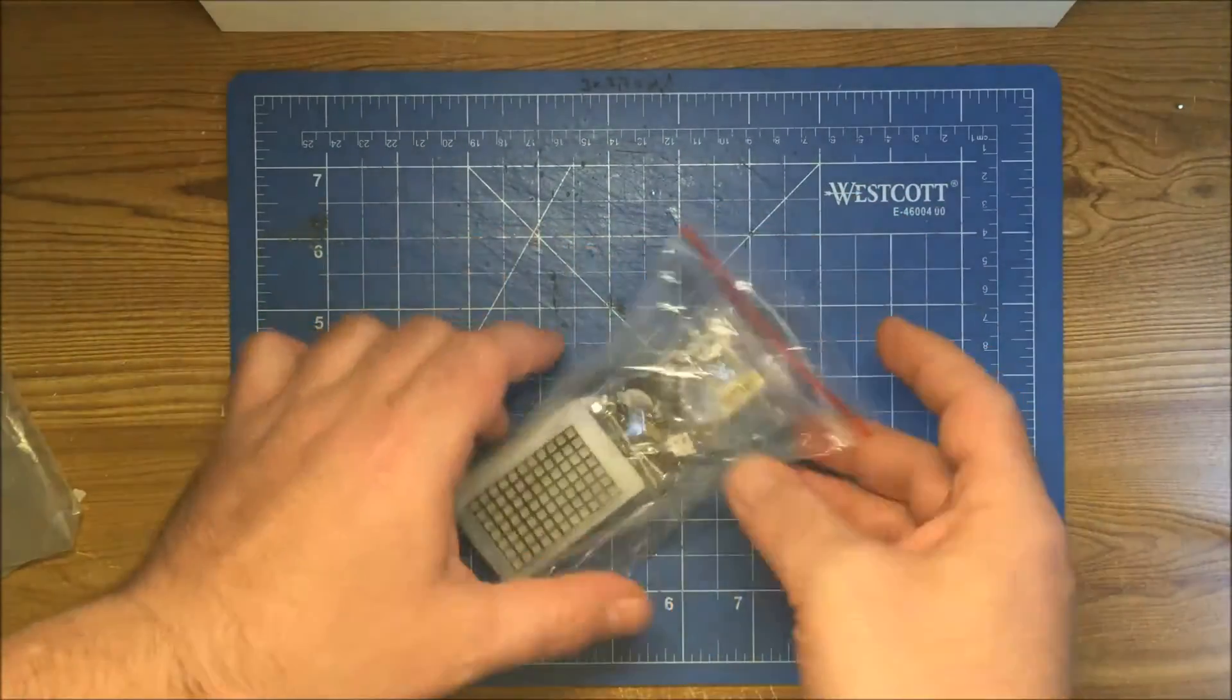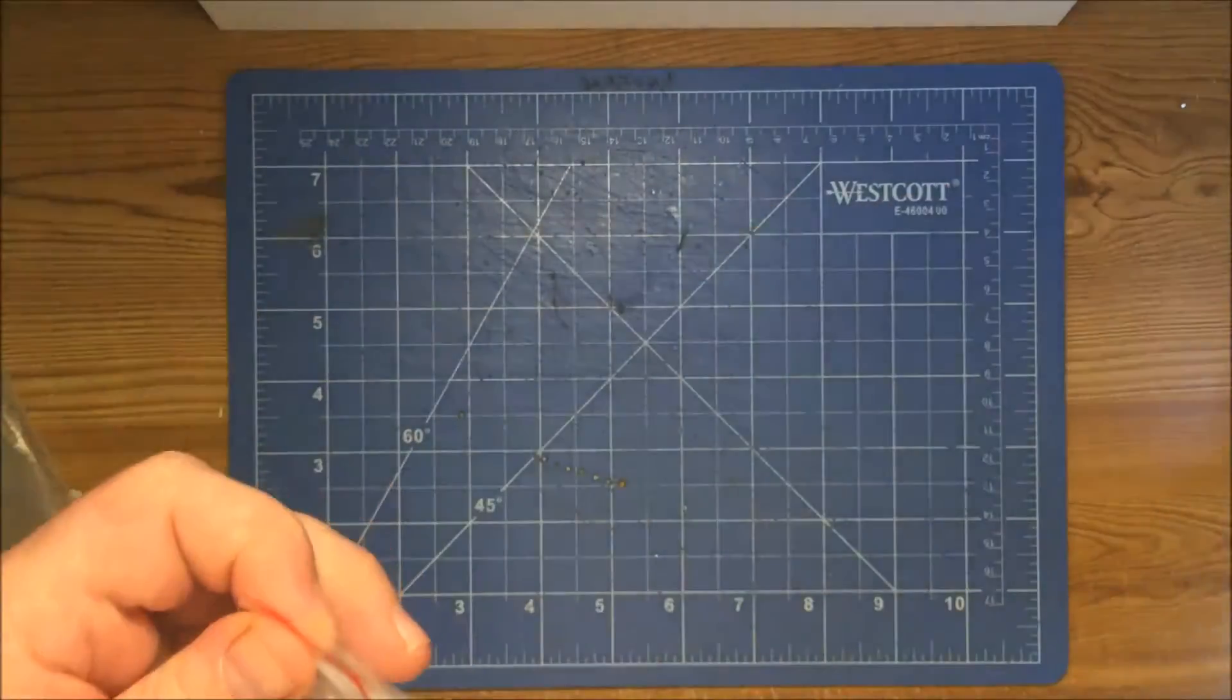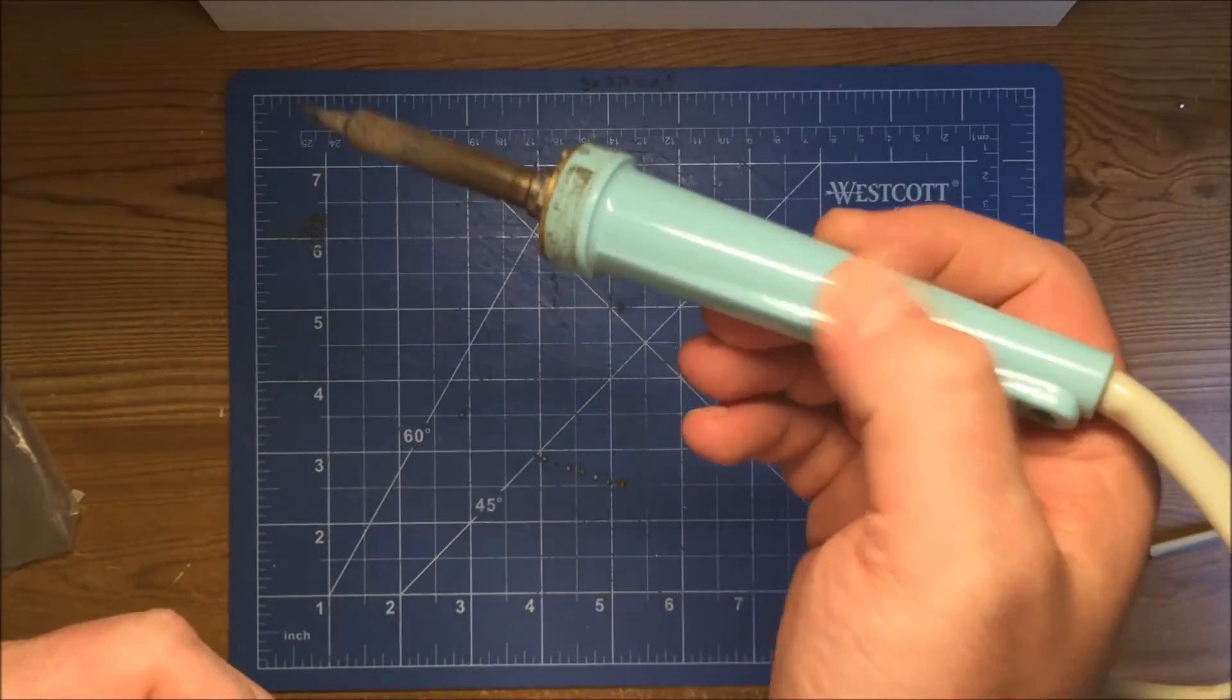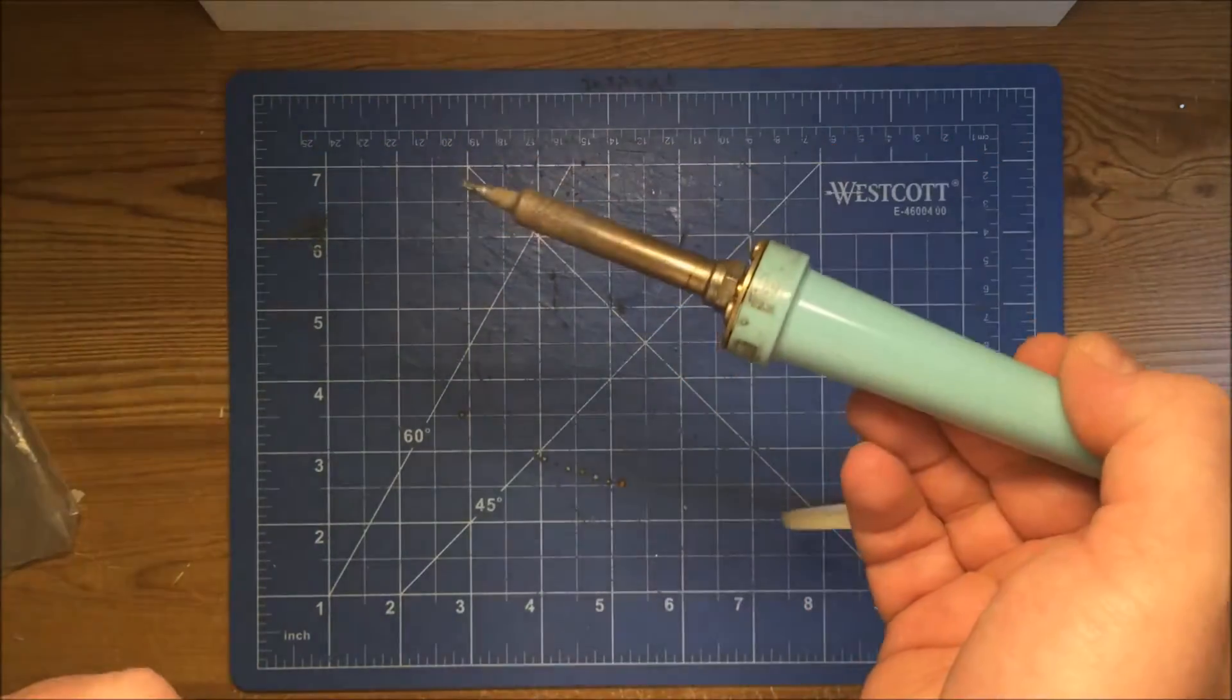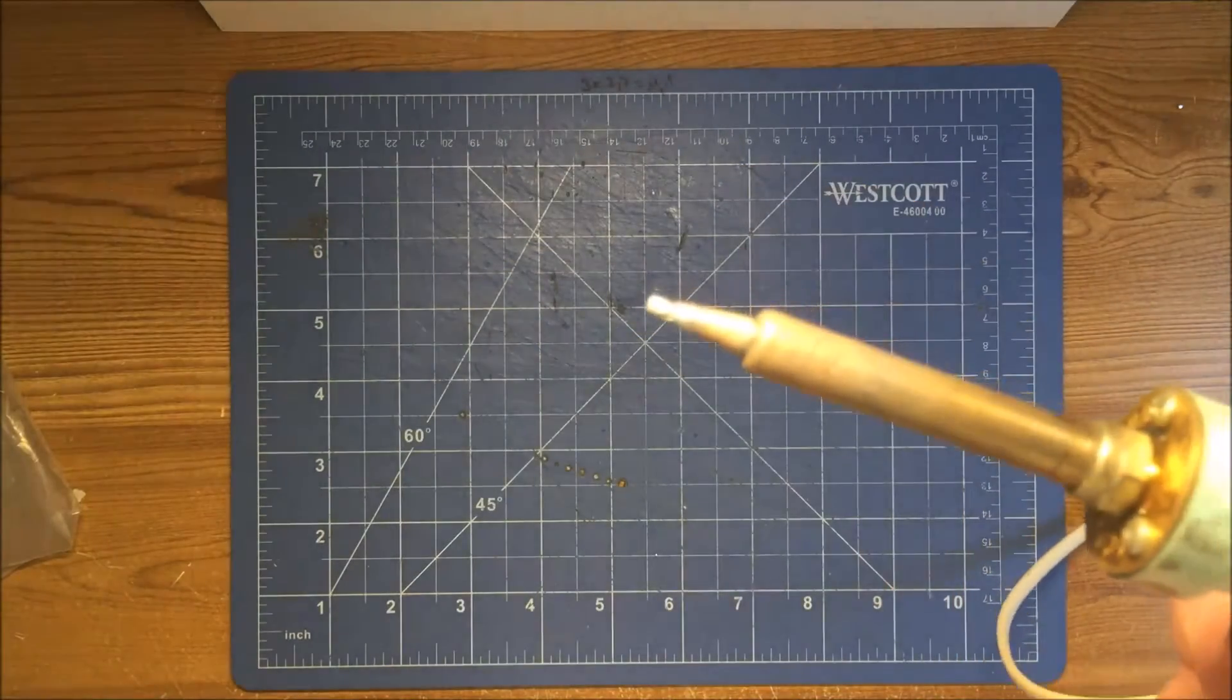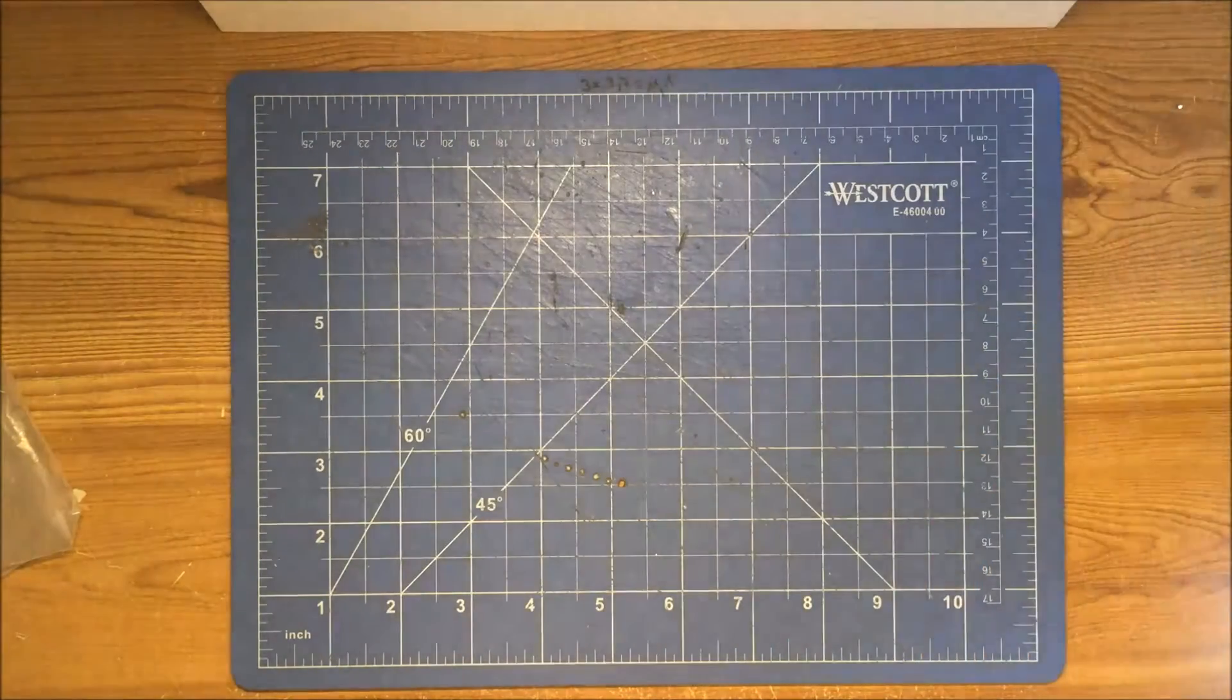Maybe my first soldering video, so be surprised when I use the big 21-year-old - 29 years, 29 years old - Weller soldering iron, the good one with a very, very big tip. I like the big tip better than the small tip.